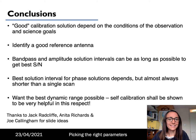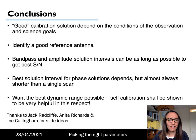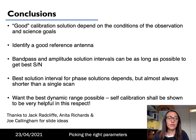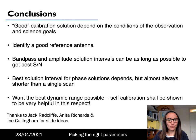In conclusion, here are a few take-home points. What counts as a good calibration solution depends on the conditions of the observation and your science goals. It's key that you identify a good reference antenna at the beginning — for some arrays there may be a standard one that's always used. Your bandpass and amplitude solution intervals can be as long as possible to get a good signal-to-noise, but the best solution interval for phase calibration depends and is almost always shorter than a single scan. We ideally want our dynamic range to be as high as possible, and self-calibration can be very helpful for this — you'll learn more about that in the next lecture.